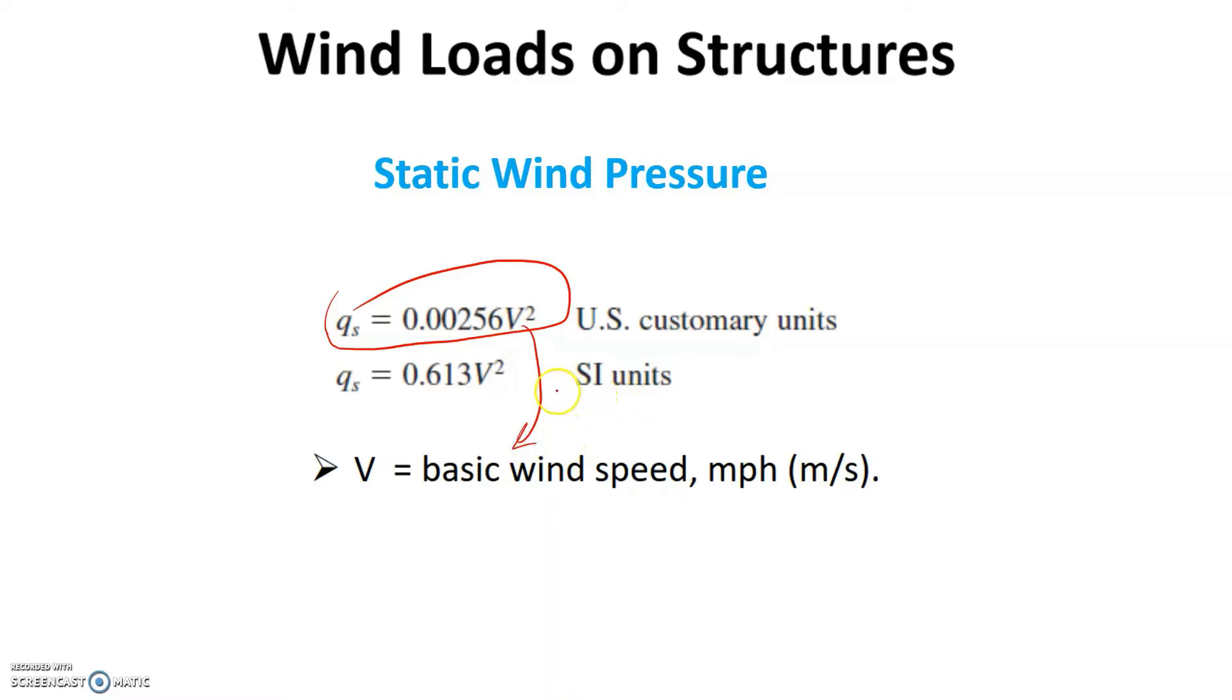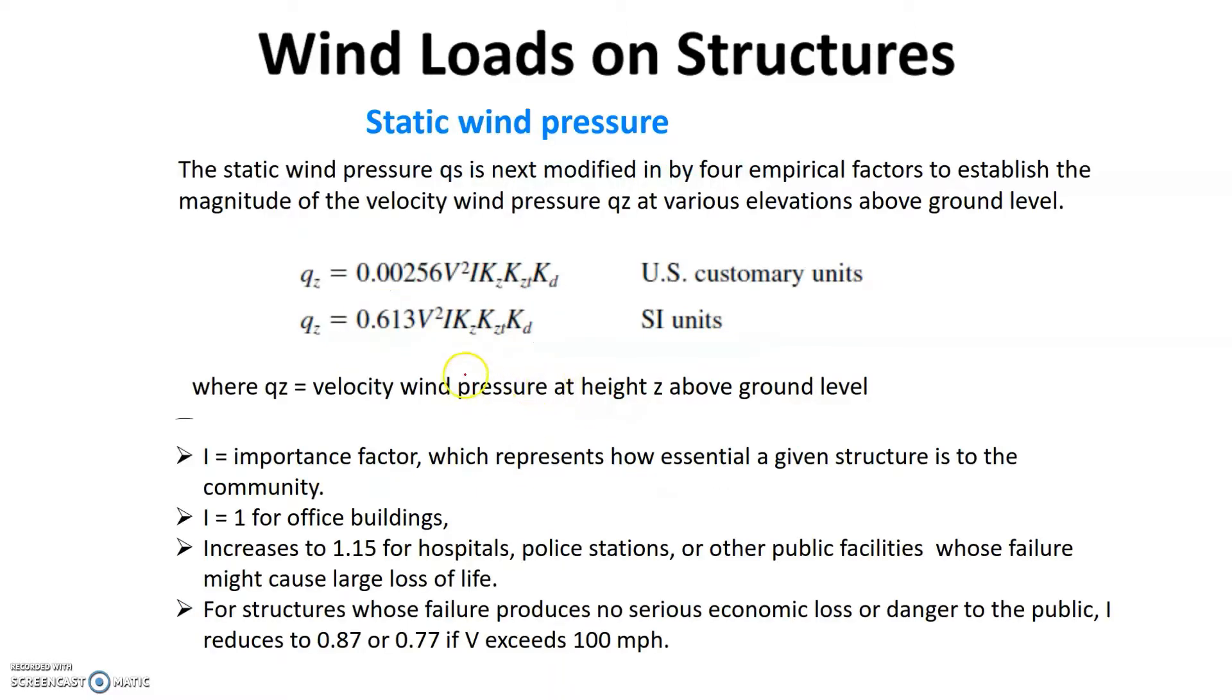Based on Qs, we calculate a quantity called Qz. Qz is the magnitude of velocity wind pressure at various elevations. This is dependent on height and also other factors such as KZT, KD, as well as the importance factor I. Qz is the velocity wind pressure at height Z from the ground level.